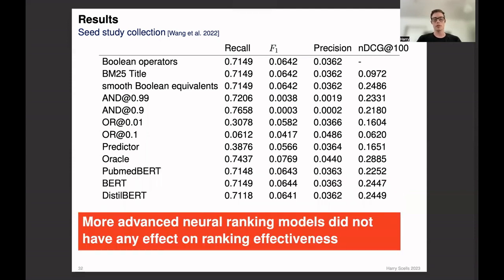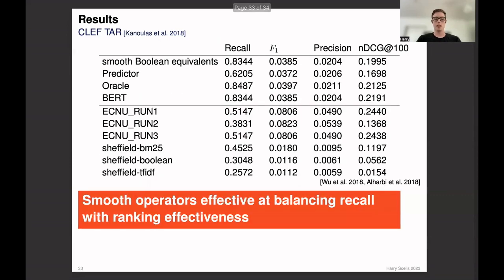We also finally investigated several neural ranking methods. We found that there were only very marginal differences in ranking effectiveness compared to BM25. Finally, we also compared our results from the CLEF TAR task. We found that using a neural ranking model, we were able to obtain similar ranking effectiveness while maintaining a very high recall.